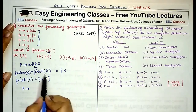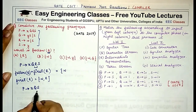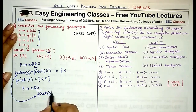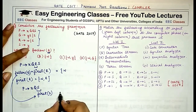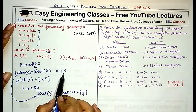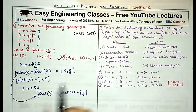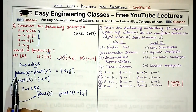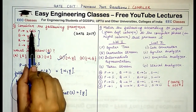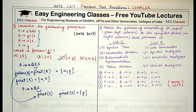Since FIRST(R) contains epsilon, we cannot write epsilon in FOLLOW. Instead, we substitute and look at what follows R, which is S. So FOLLOW(Q) also includes FIRST(S). FIRST(S) is Y. Therefore, FOLLOW(Q) = {W, Y}, which corresponds to answer choice C.